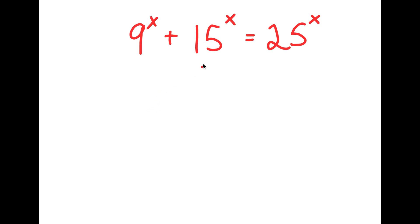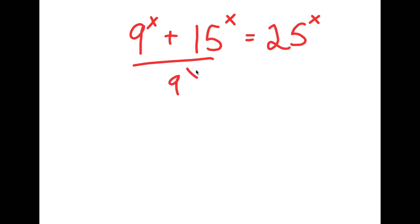In this problem, I have 9 to the power of x plus 15 to the power of x is equal to 25 to the power of x. I'm going to first start by dividing both sides by 9 to the power of x.